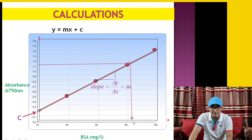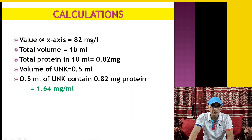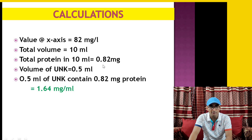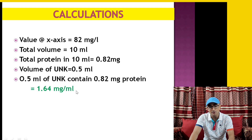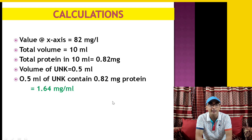From the standard curve, we get approximately 82 mg/L for the unknown. Since the total reaction volume was 10 ml, the total protein in 10 ml is 0.82 mg. Since only 0.5 ml of the unknown sample was used and diluted to 10 ml, those 0.5 ml contained 0.82 mg protein. Therefore, the concentration of the unknown is 0.82 mg / 0.5 ml × 2 = 1.64 mg/ml. This is how protein concentration is calculated using the Lowry method.